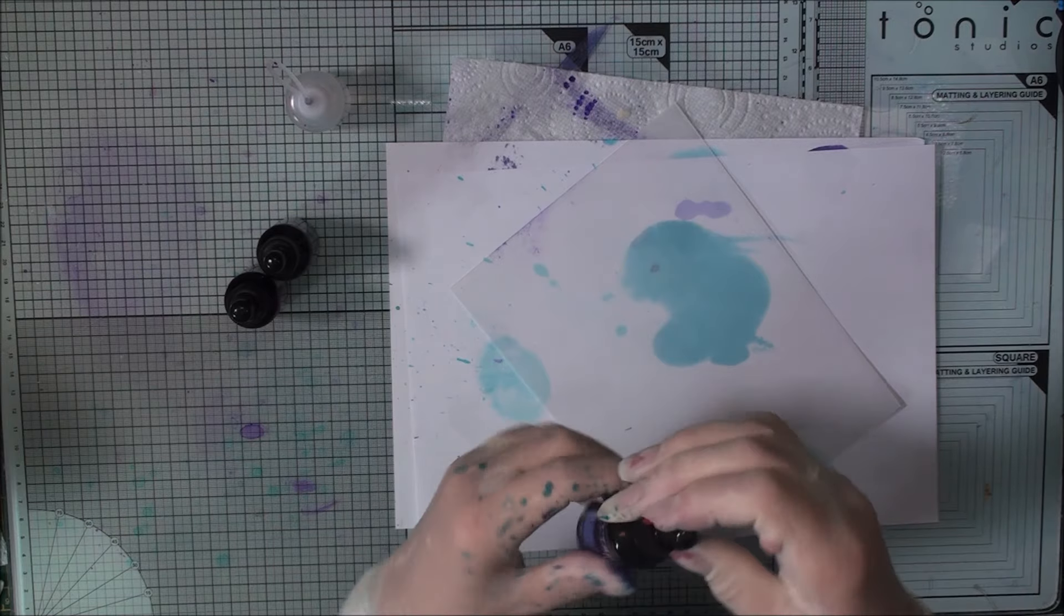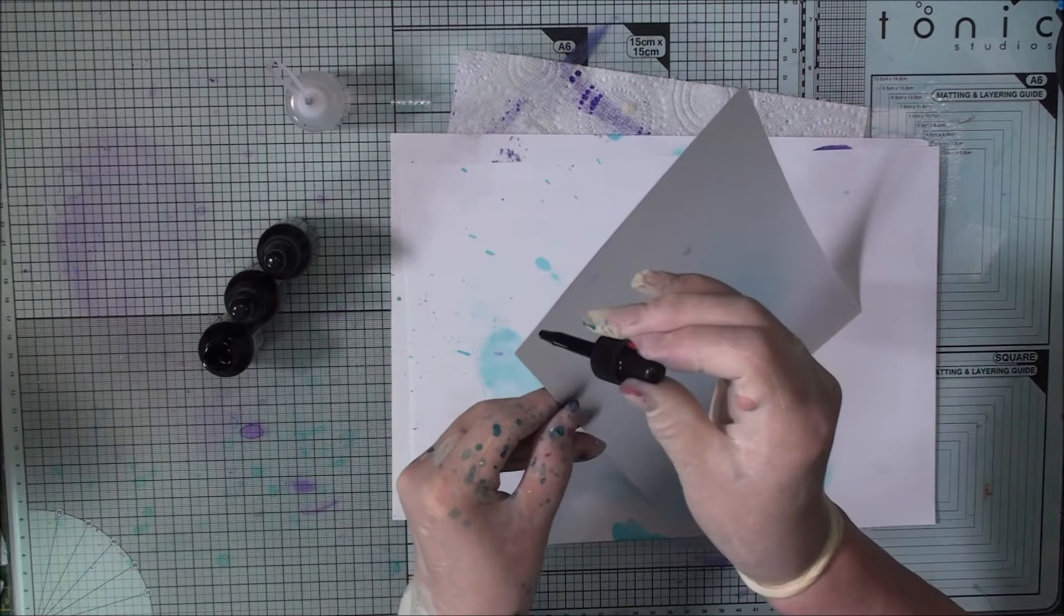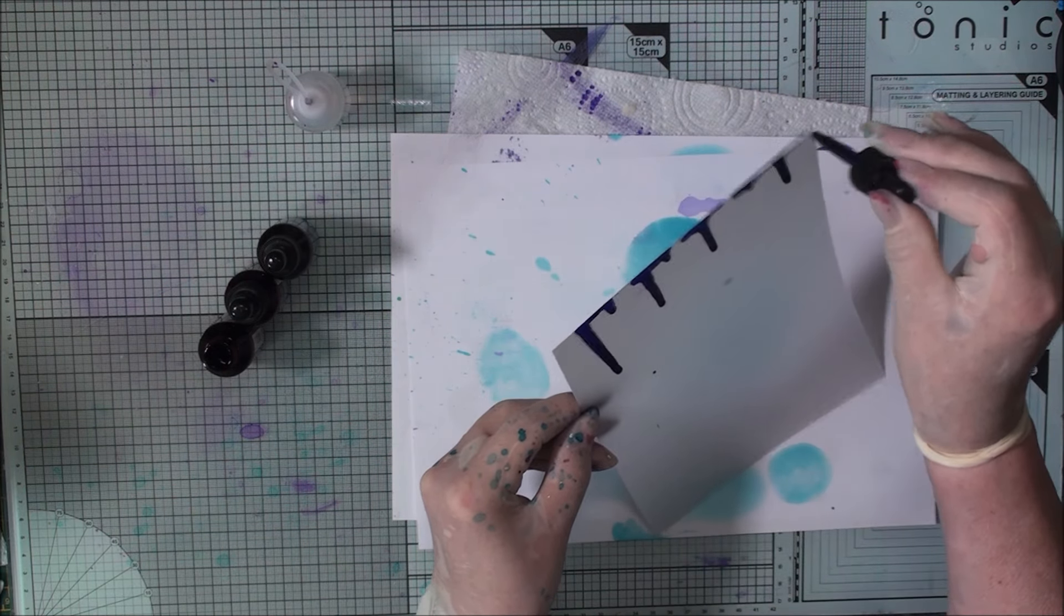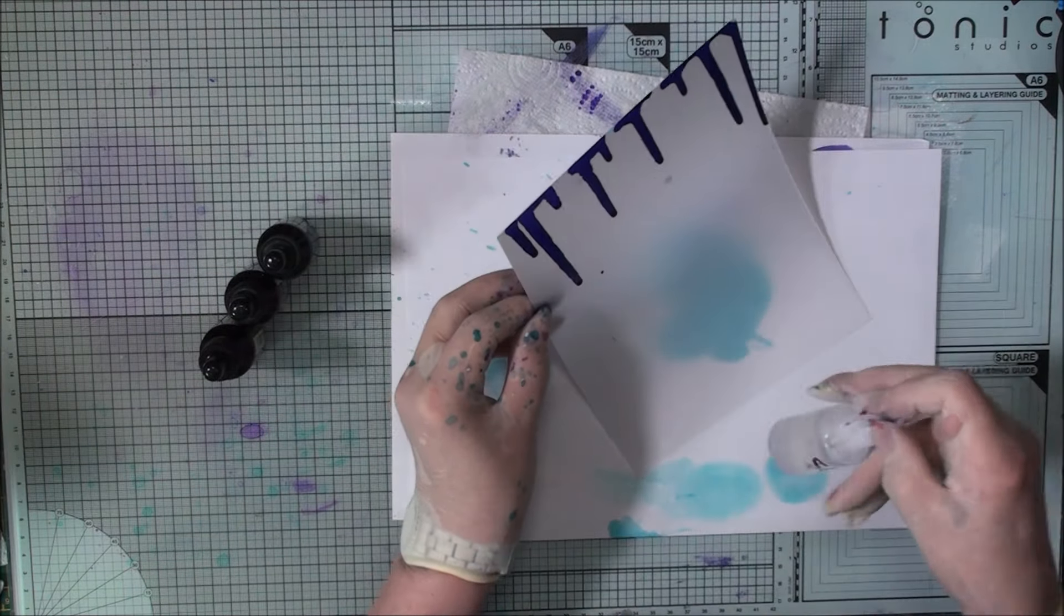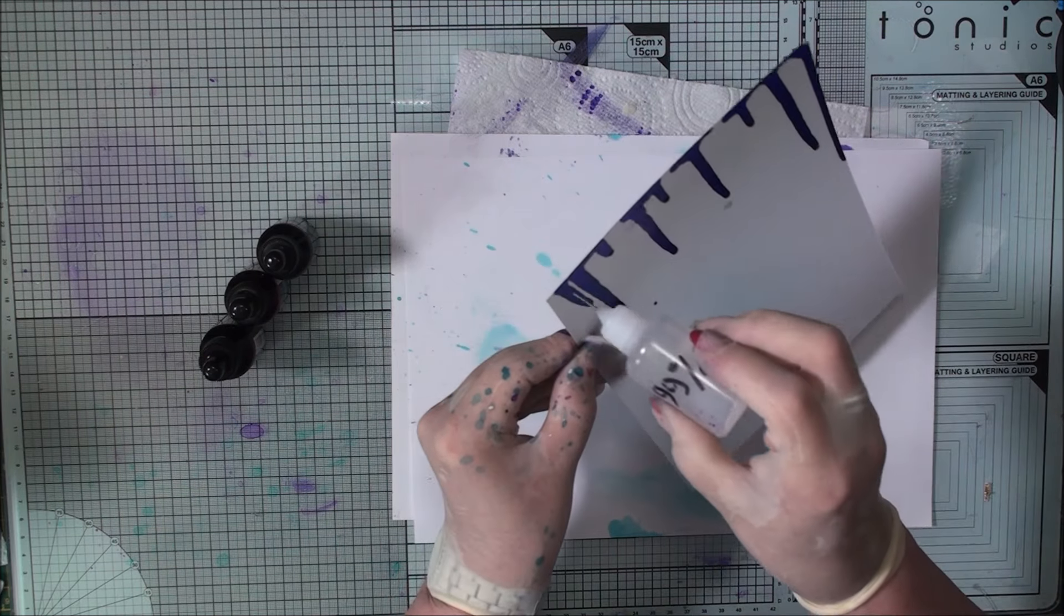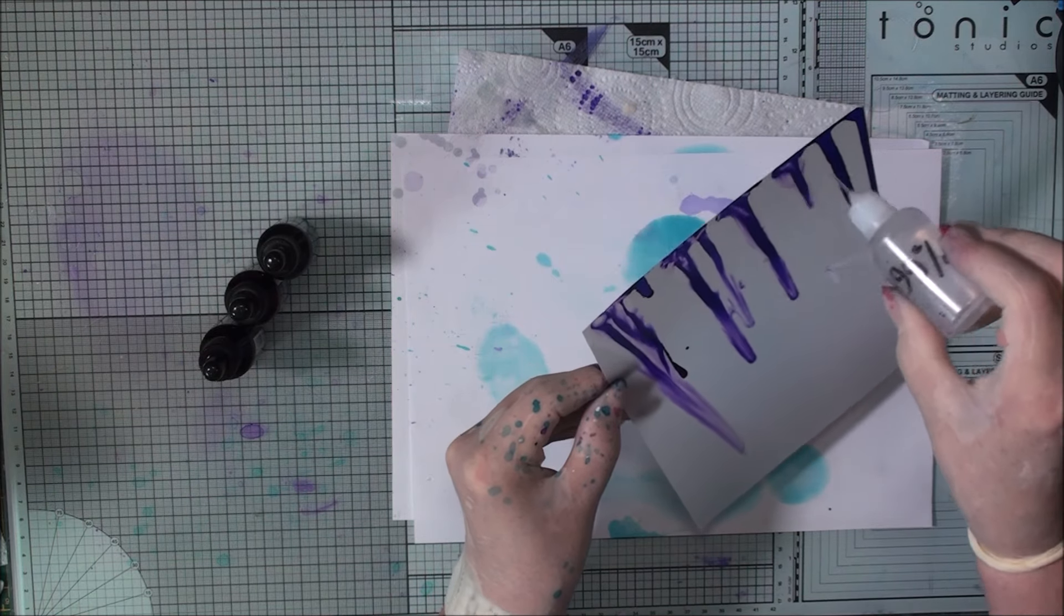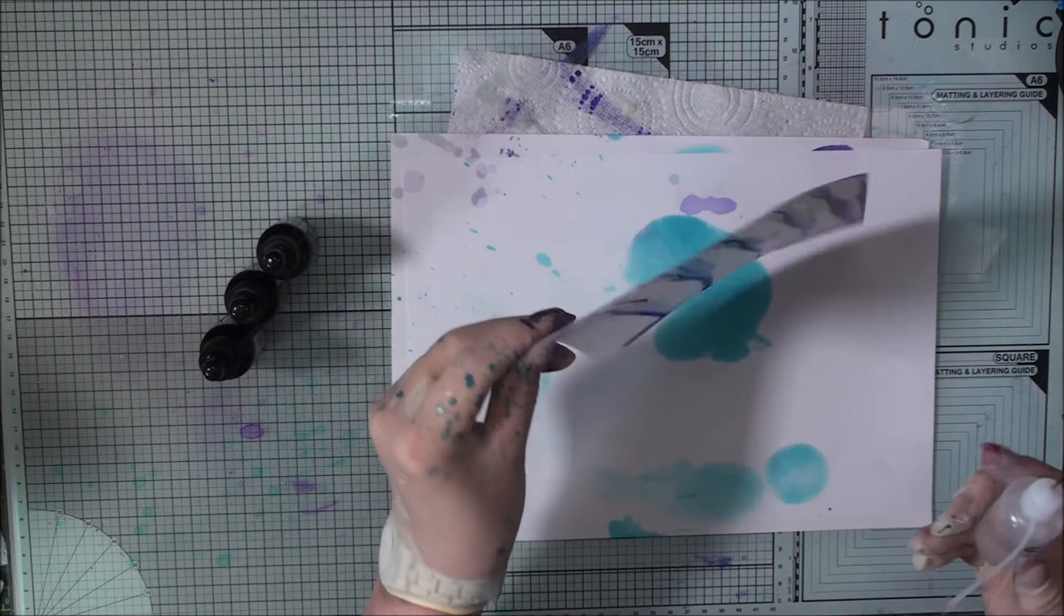So what we're going to need to do is fill the dropper and we need to hold this up. So we're going to run our colours along the edge and let them run down. Now you will need your isopropyl for this. So all you're going to do is just squirt this on and let this run down. You're going to let that run all the way down to the bottom.